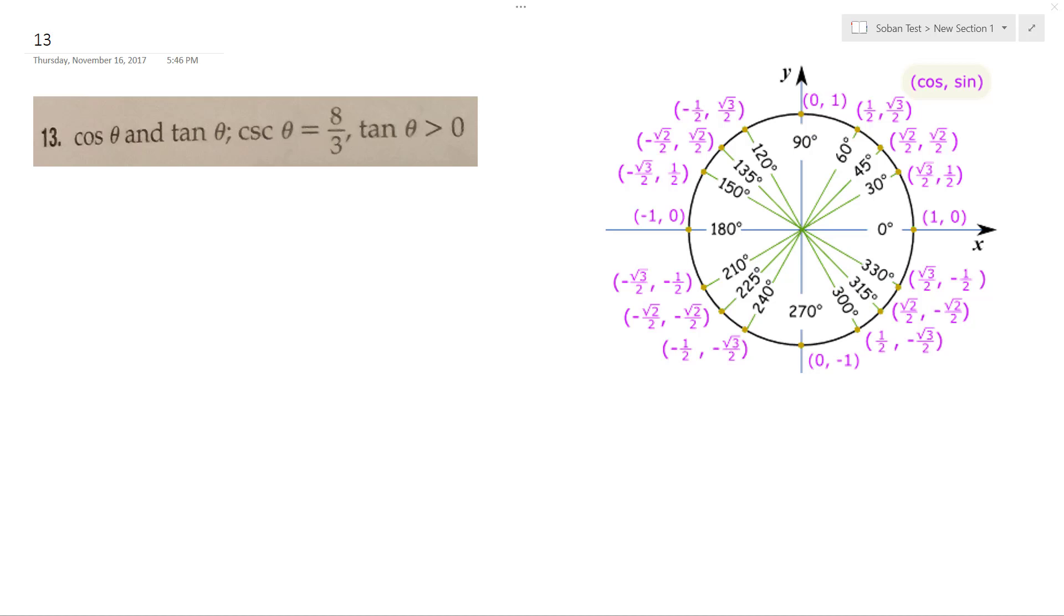All right, find cosine and tangent. Cosecant of theta is equal to 8 over 3, and tangent is greater than 0.